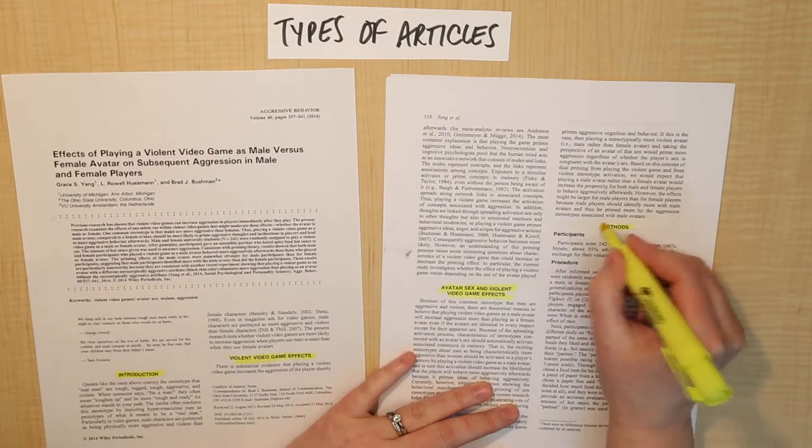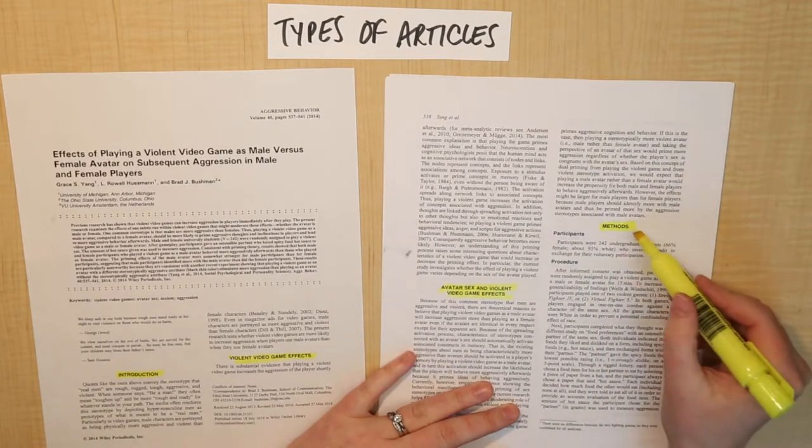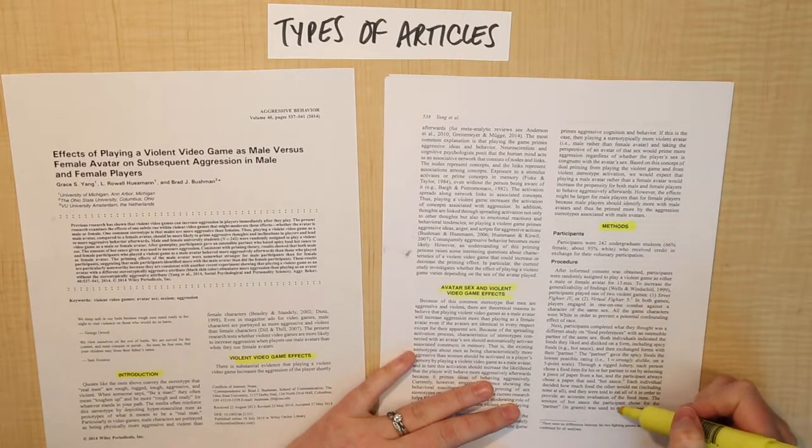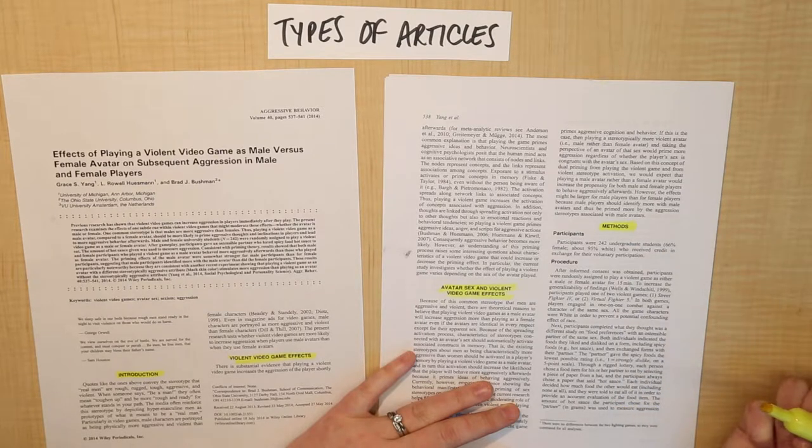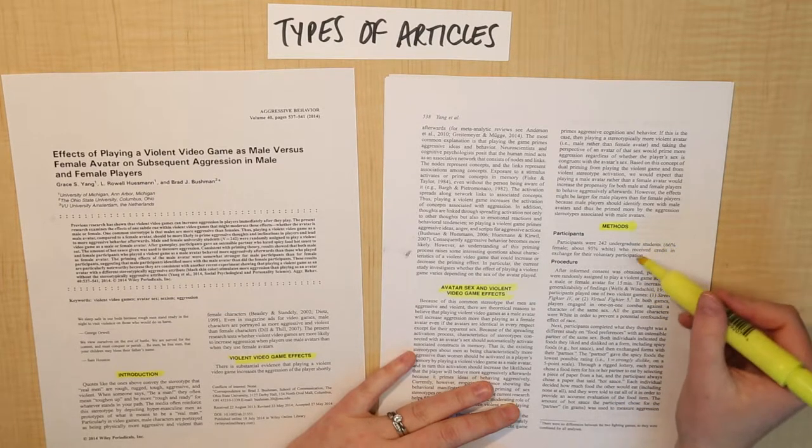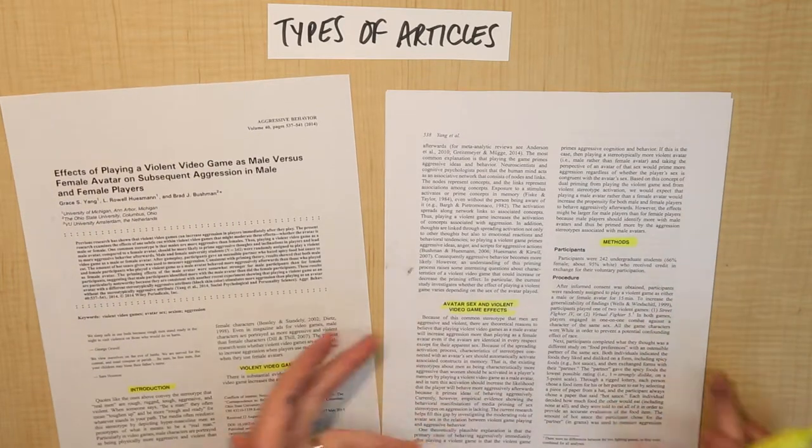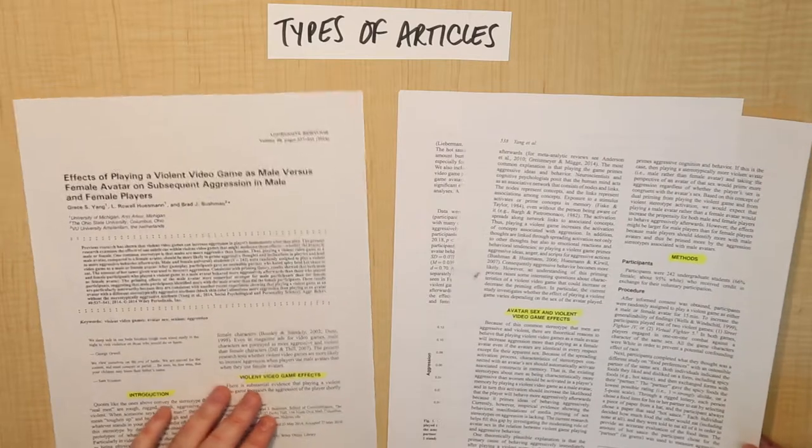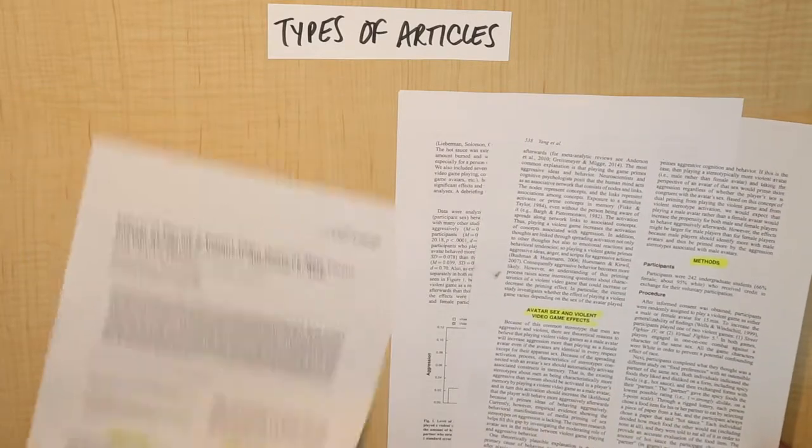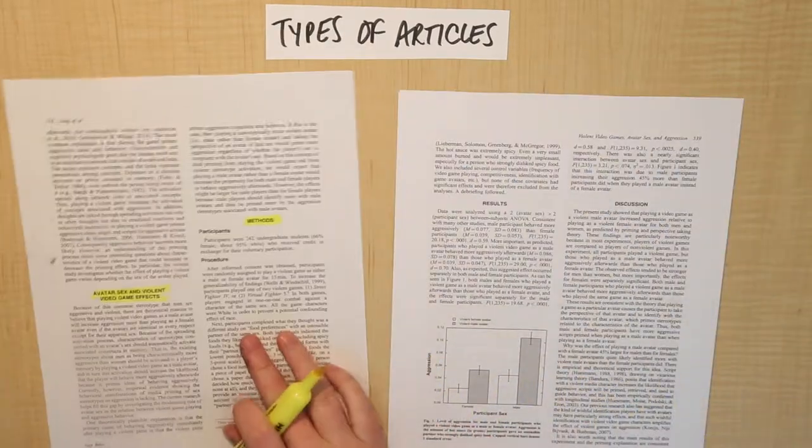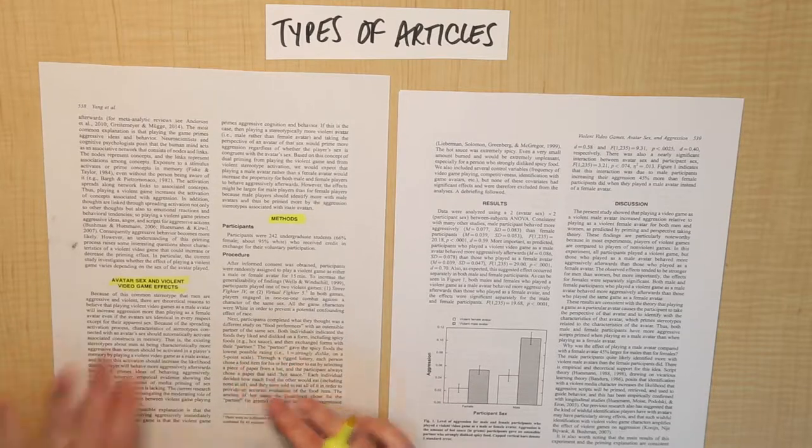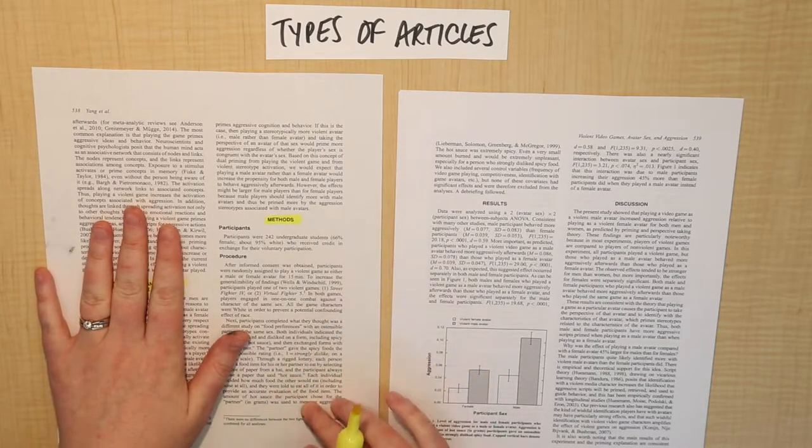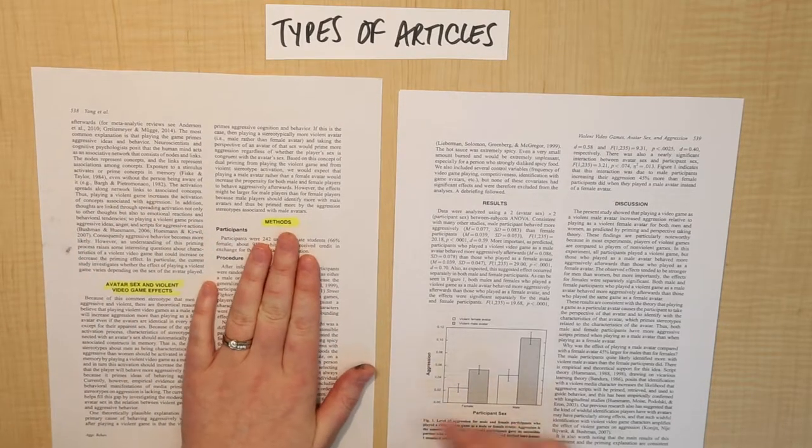Then they'll have a section called Methods, where they outline what method they took in conducting their research. And the idea here is that if another person, another researcher, wanted to be able to replicate this study, they should be able to follow these methods and do the study again. So after the intro and the review of existing research, and then after they've talked about their methods...